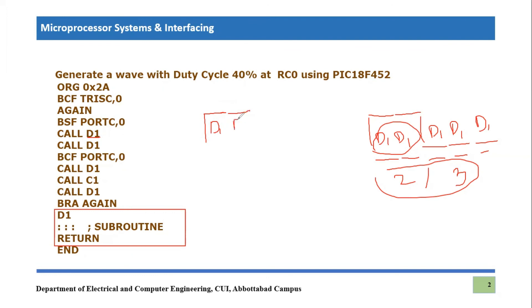And then what we do, we cleared the port C,0. That means this logic level will fall to zero level. And then we call delay three times. Okay, there is a mistake. Let me correct it. Okay, so we call a delay after falling to this level. So it will be D1 again, D1 and again D1, as we explained earlier. So we call it three times. Call D1, call D1, call D1. It was C1 mistakenly written, so I corrected it as well. And then we branch it again to start another next cycle. So in this way, we generate a wave, you can say it's a rectangular wave with a duty cycle of 40%.